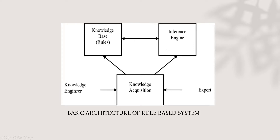Secondly, there is an inference engine, also called the semantic reasoner. This component is responsible for interpretation of the rules and taking action accordingly. Thirdly, the system contains a temporary working memory with which the inference engine executes a production system program. Lastly, the rule-based system contains a user interface allowing humans to continue to add, subtract or change the ways in which input and output signals are received and sent.